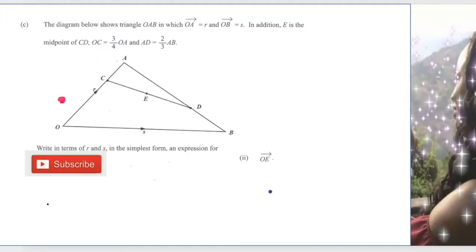So that means this line is three-quarter R. So OC is three-quarter R and then AD is two-thirds of AB. I'm going to use that shortly.